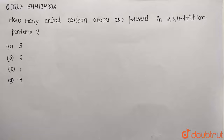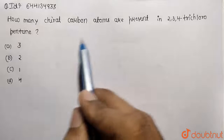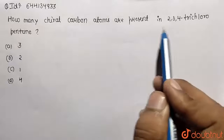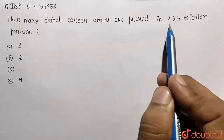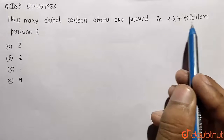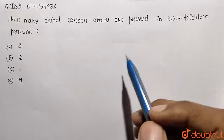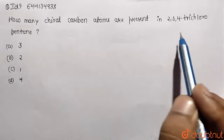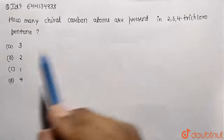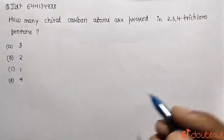In this given question, we need to answer how many chiral carbon atoms are present in the formula 2,3,4-trichloropentane. First of all, we need to decode this formula — that is, the name given to us.